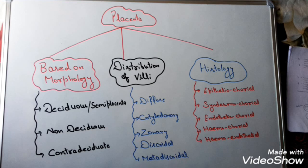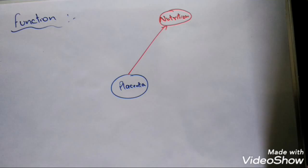For students studying this topic for the first time, here is a summary. Based on morphology, placenta is classified as deciduous, non-deciduous, and contra-deciduous. Based on distribution of villi: diffuse, cotyledon, zonary, discoidal, and metadiscoidal. Based on histology: epitheliochorial, syndesmochorial, endotheliochorial, hemochorial, and hemoendothelial type of placenta.